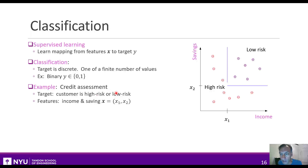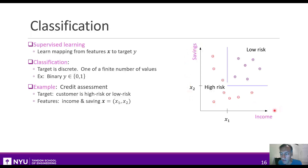A real bank would use a lot of features to make that prediction, but just as a toy example, imagine it had just two features: the income of that customer and its savings in the bank account. We could visualize the data for this problem like this — we represent each feature as a vector x1, x2, and each customer would be a point in this x1, x2 space, that is, its income and savings.